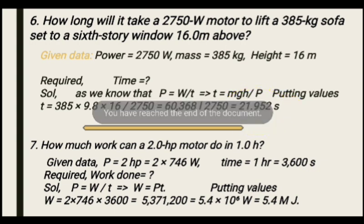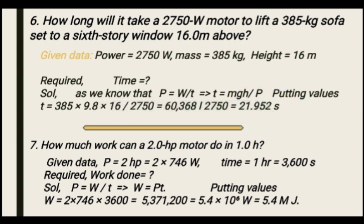Next numerical: how much work can a two horsepower motor do in one hour? Given: power is 2 horsepower. We need to convert horsepower to watts. Solution: by definition, power P equals W divided by T, and rearranging gives W equals P × T. Putting in the converted values to find total work done.